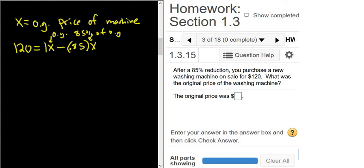There is a 1 here, right, because 1 times X is X. So this is actually equal to 1 minus 0.85, which is 0.15X.